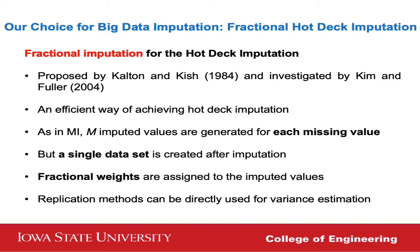Fractional weights of the observations are assigned to the imputation values, so we can clearly see how it imputes. We can get the fractional weights as a result. Replication methods can be directly used for variance estimation. Uncertainty estimation after data curing is another issue we must tackle. This method works well with existing replication methods such as the jackknife method, or a simpler, more efficient approach for very large datasets.